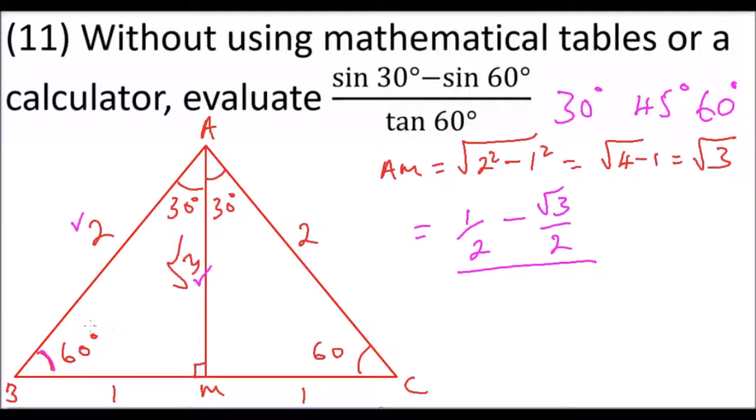Tan 60° is opposite over adjacent, so it is root 3 divided by 1. This equals, we get the LCM here, which is 2. So this is 1 minus root 3.